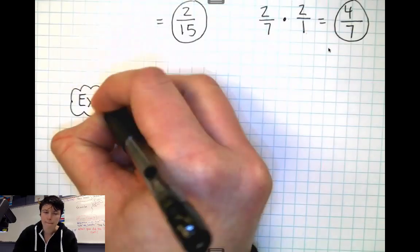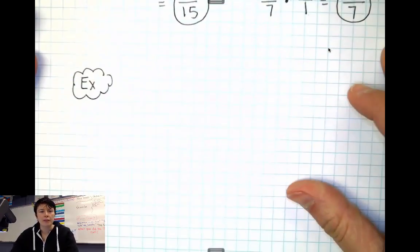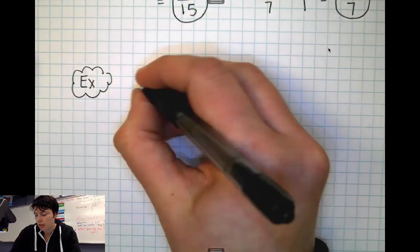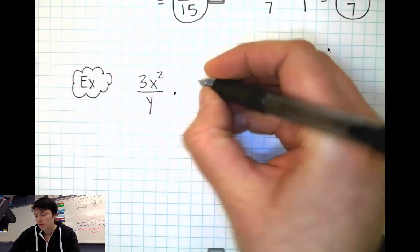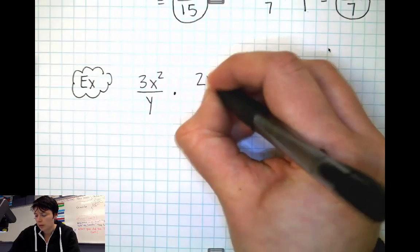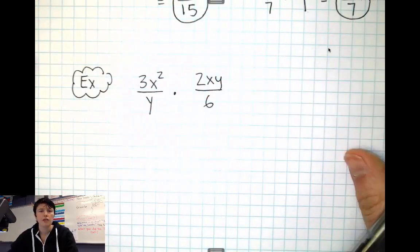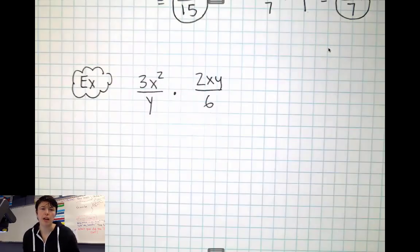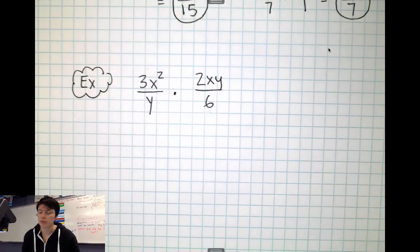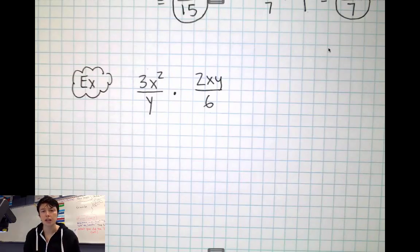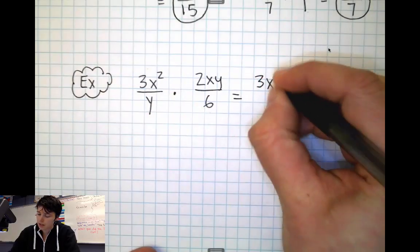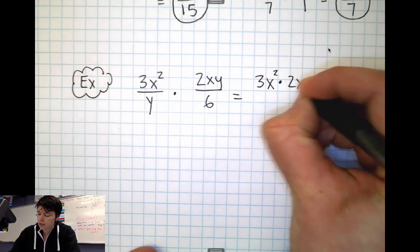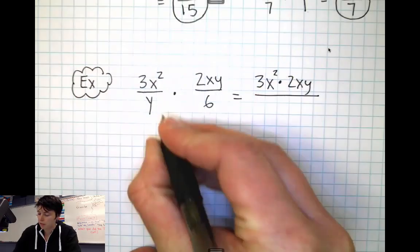We might have something like 3x² over y times 2xy over 6. Still fractions, but now we call it a rational expression because we've got variables involved, we have x's and y's, but the rules are still the same, we're just going to go straight across. So I'm going to multiply straight across.